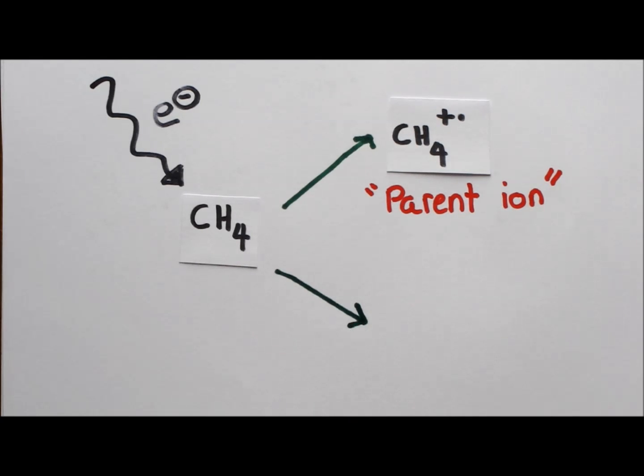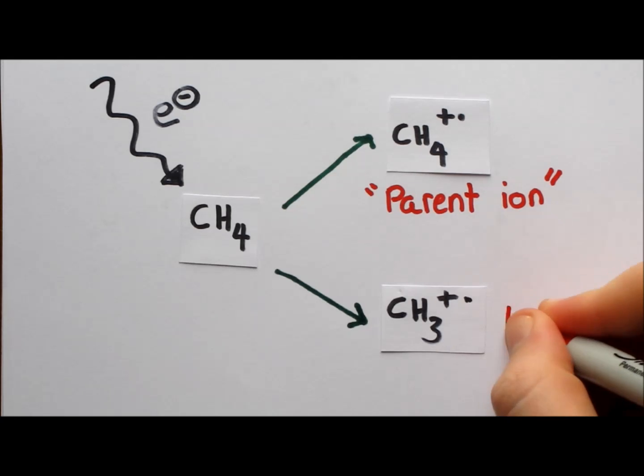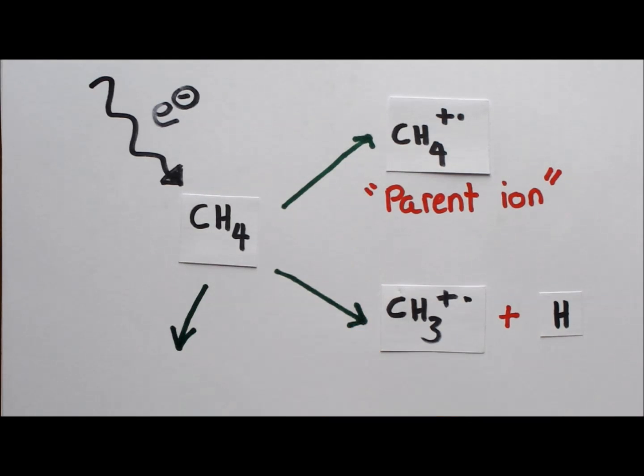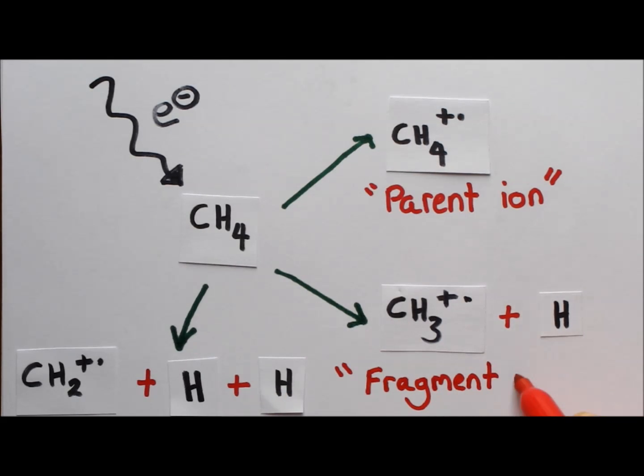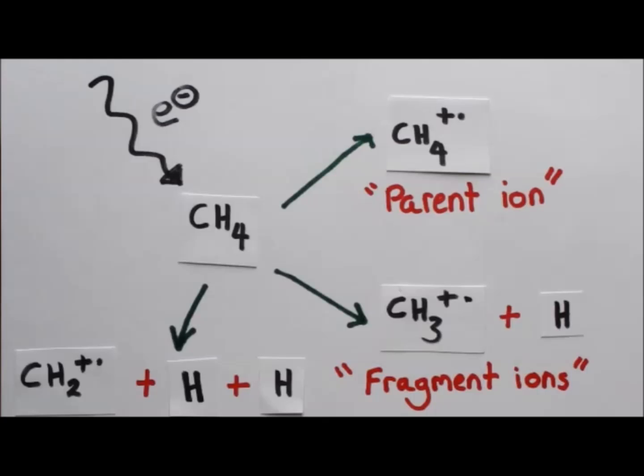The energy of the electron could, however, be enough to break a carbon-hydrogen bond. This would create a CH3 plus radical. Likewise, this could occur with the breaking of two carbon-hydrogen bonds, forming a CH2 plus radical. These CH3 and CH2 plus radicals are the fragments that will be detected alongside the parent molecule in the mass spectrometer.